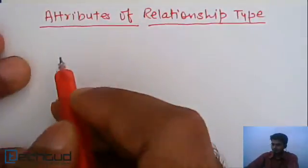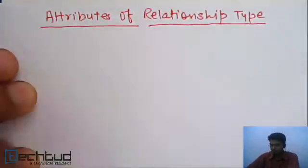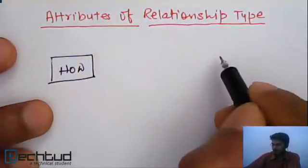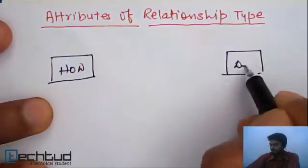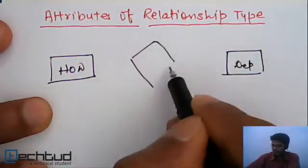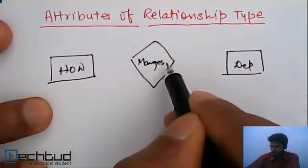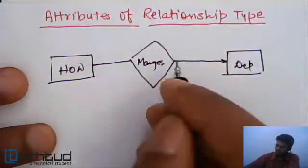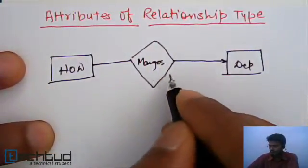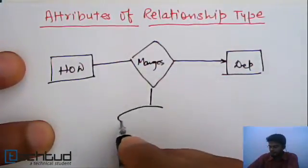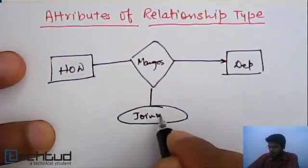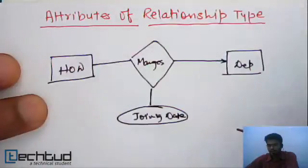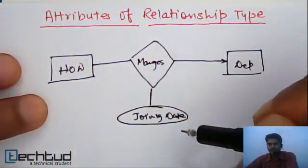Consider the relationship between a department and a HOD. This is entity type HOD and this is entity type department. This is the HOD relationship — managers. HOD manages department. So here we may have an attribute in the relationship itself, that is joining date. This is the date from which a particular HOD has started managing the department. So this relationship has an attribute.